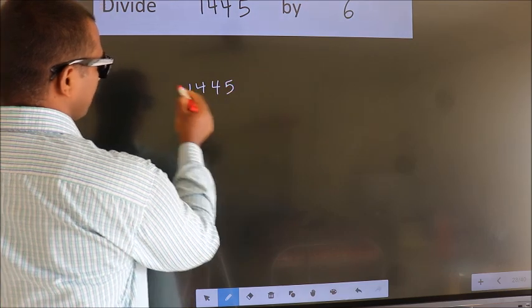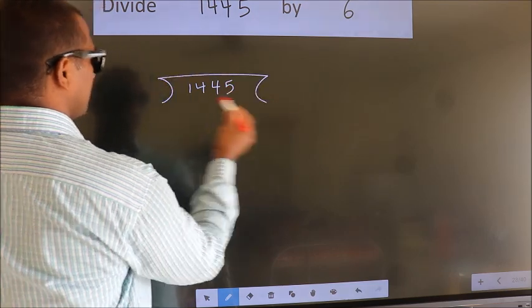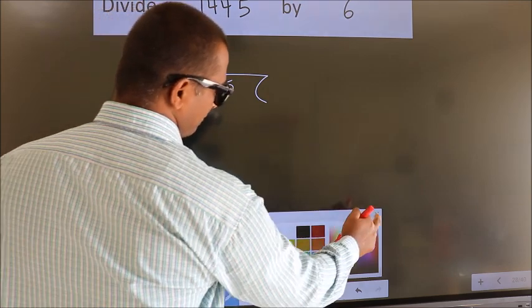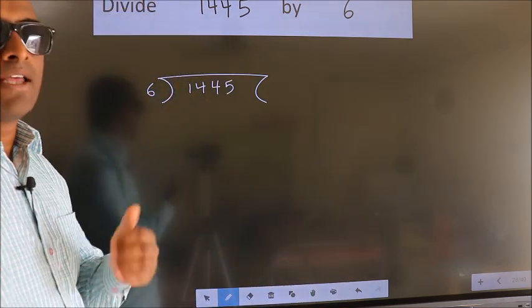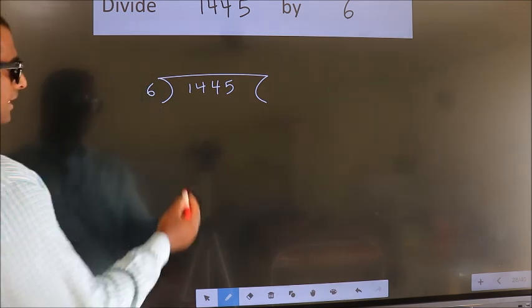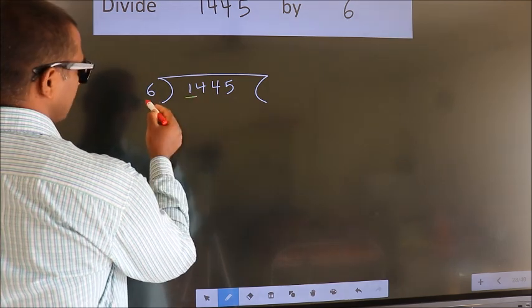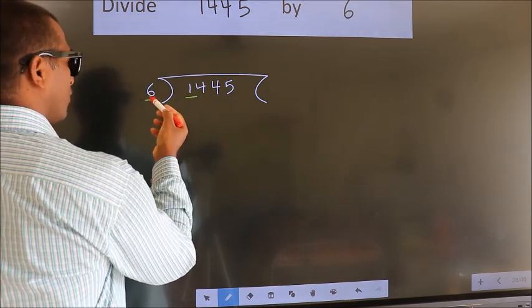This is your step one. Next, here we have 1, here 6. 1 is smaller than 6, so we should take two numbers: 14. A number close to 14 in the 6 table is 6 times 2, which is 12.